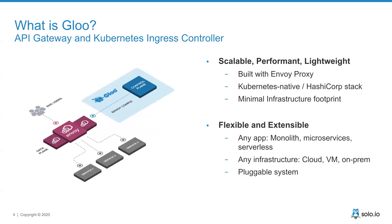Glue is an API gateway built on top of Envoy. Glue is a control plane for Envoy, and Envoy acts as our data plane. By being built with Envoy, we're looking at where the community is going in terms of proxy implementation. Envoy is the leading proxy of choice when building a service mesh like Istio, or for modern cloud-native API gateway technologies like Glue.